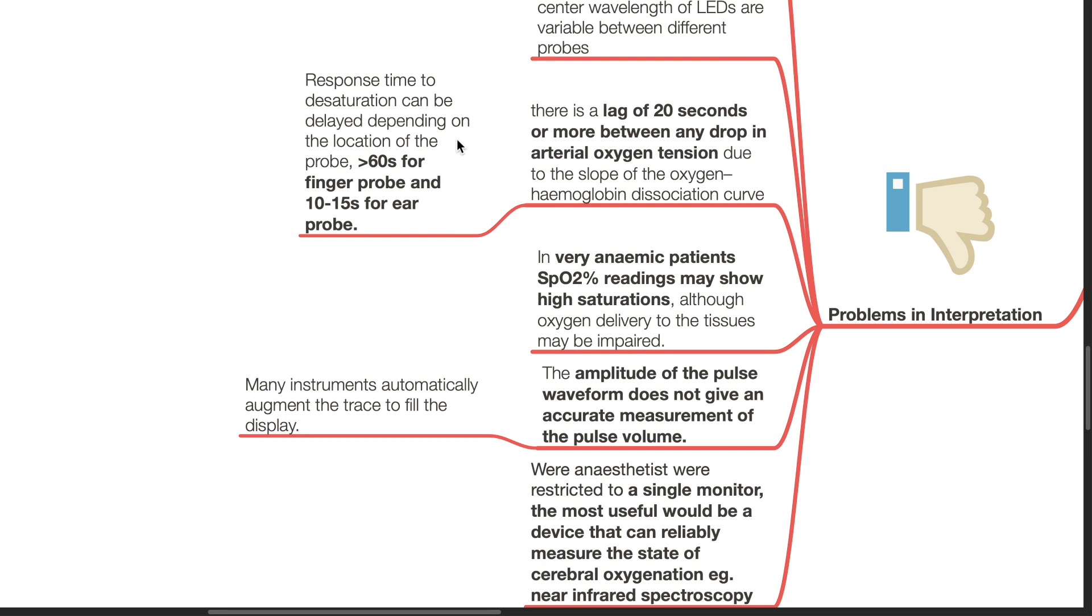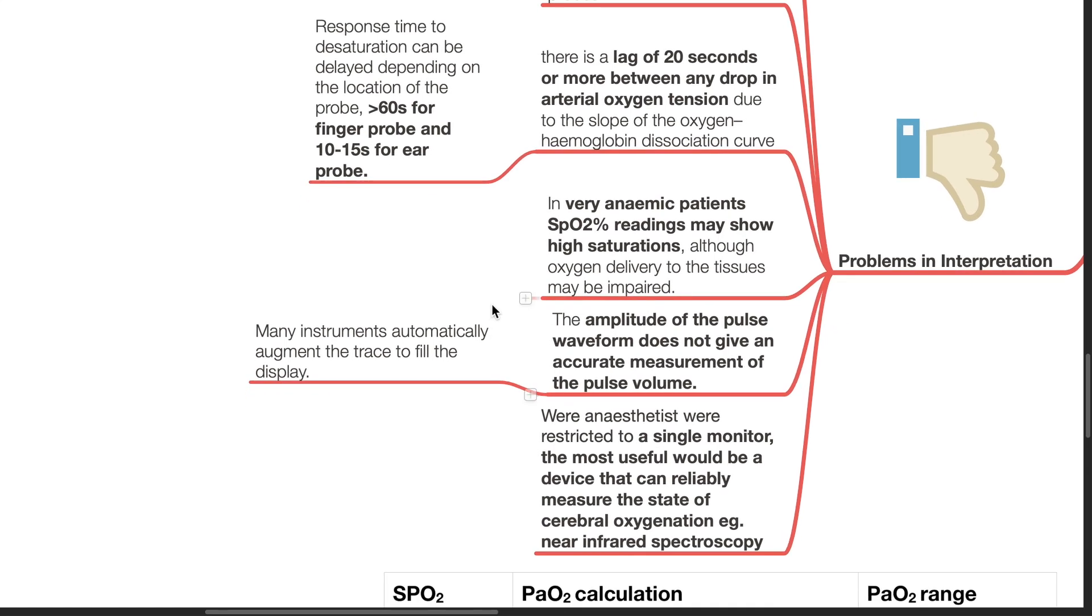In very anemic patients, SpO2 readings may show high saturations, although oxygen delivery to the tissues may be impaired. The amplitude of the pulse waveform does not give an accurate measurement of the pulse volume as many instruments automatically augment the trace to fill the display.